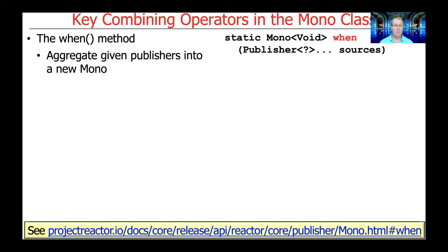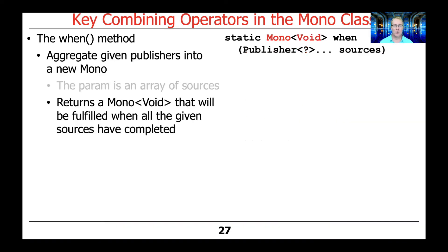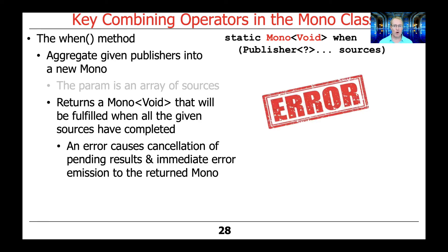The next method we're going to talk about in terms of combining things is called the When method. This is used to aggregate a bunch of given publishers into a new Mono. It takes a var-args array of publisher sources — and publisher is one of those interfaces defined in Java 9's Flow class, which is the core of the whole reactive streams model. What When does is it returns a Mono<Void> that will be fulfilled when all the given sources have completed their processing. If one of the sources has an error or exception, that causes a cancellation of any results and will immediately emit the error signal on the returned Mono, so you have to be careful if things are going to fail.